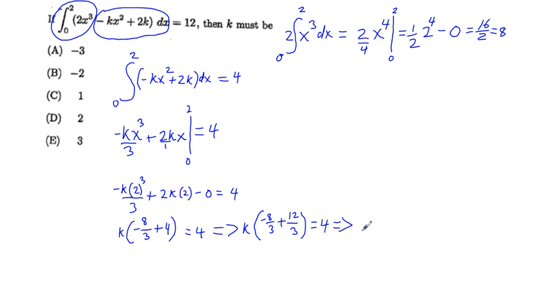And then we can multiply by our reciprocal which is 3 fourths. So k times 4 thirds times its reciprocal 3 fourths is equal to 4 times 3 fourths.